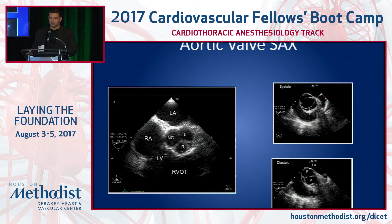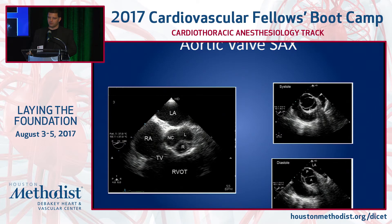Short axis view again. You have the normal valve on the left, and you have the bicuspid in diastole and systole on the right-hand side, just to see the difference between a normal valve with three cusps as opposed to the bicuspid valve with only two cusps.